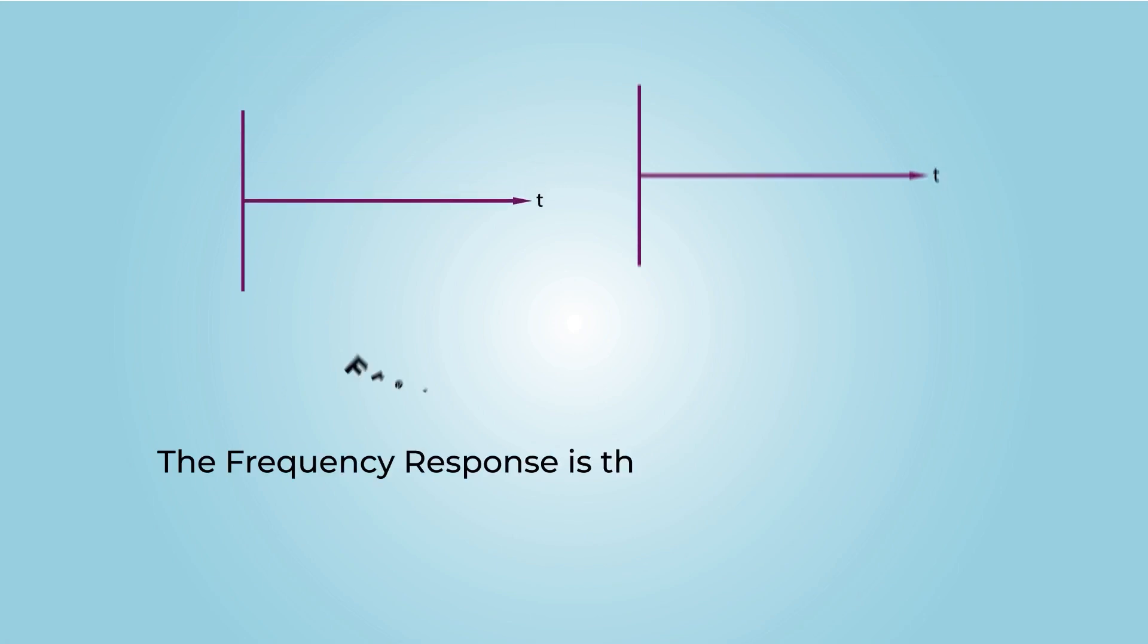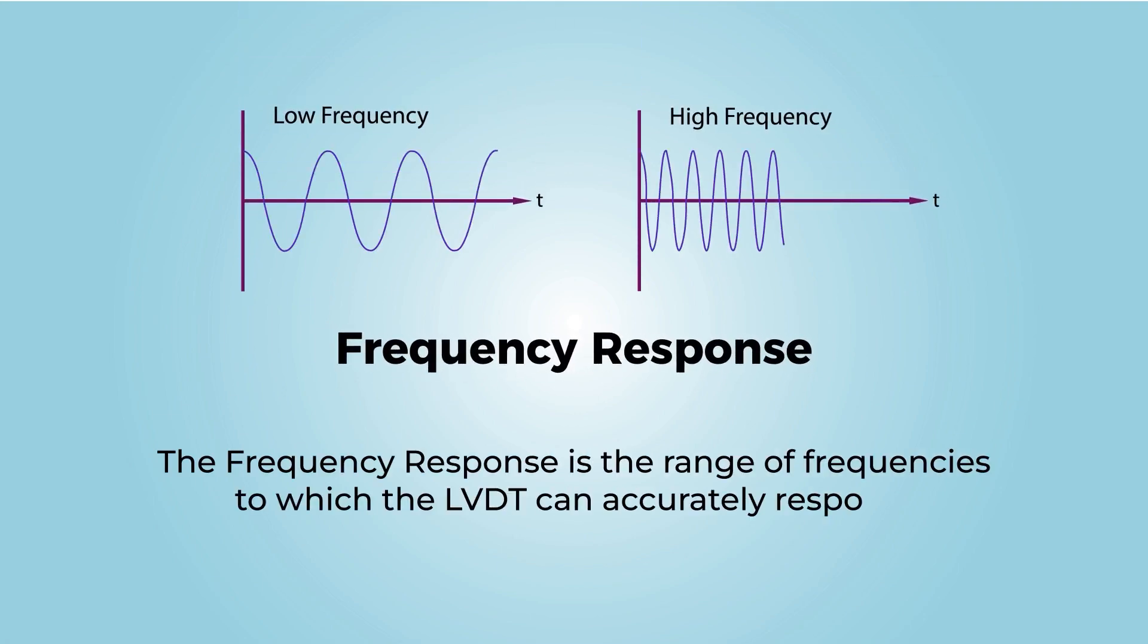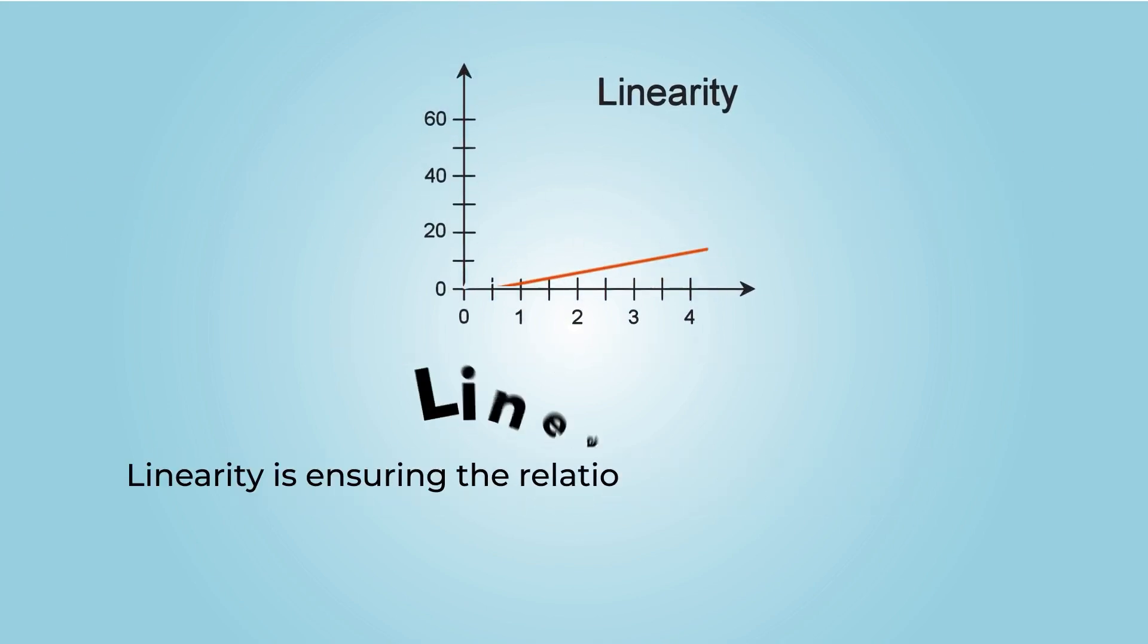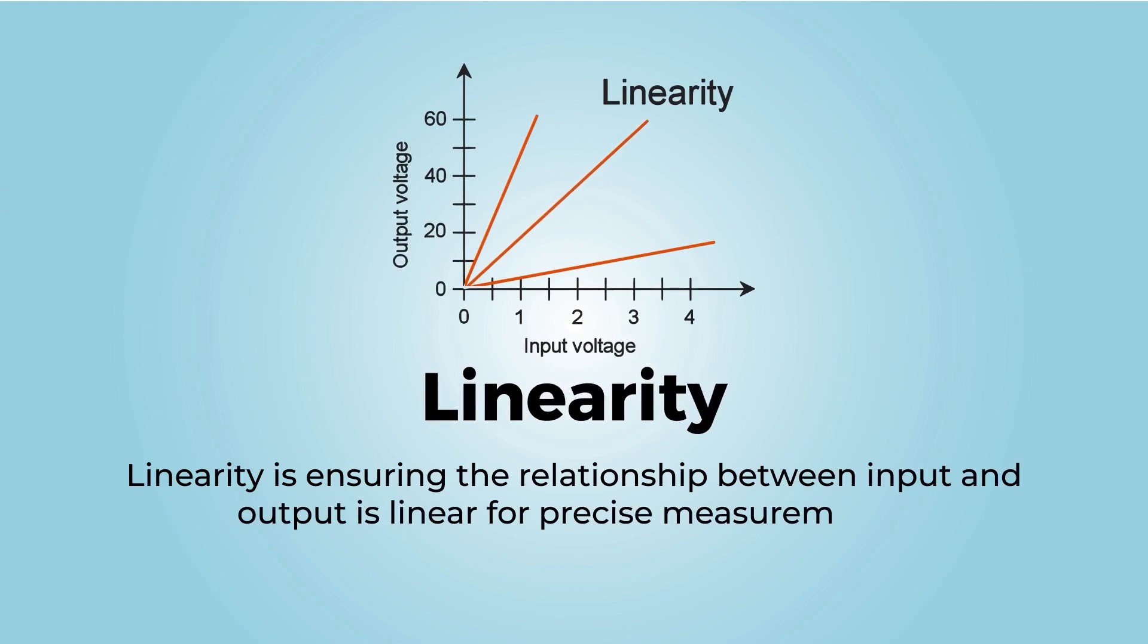The frequency response is the range of frequencies to which the LVDT can accurately respond. The linearity ensures the relationship between input and output is linear for precise measurements.